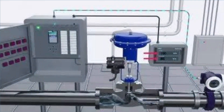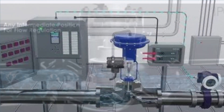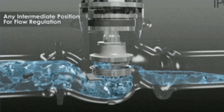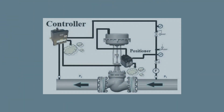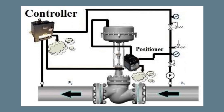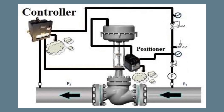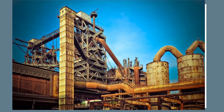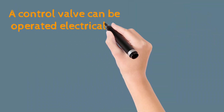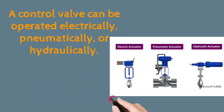A control valve is a power-operated device used to regulate or manipulate the flow of fluids such as gas, oil, water, and steam. It is a critical part of a control loop and is an example of a final control element — by far the most common final control element used in industry today. A control valve can be operated electrically, pneumatically, or hydraulically.